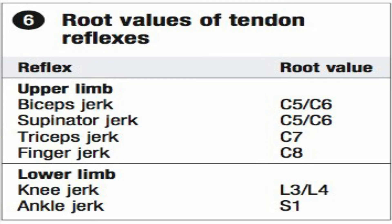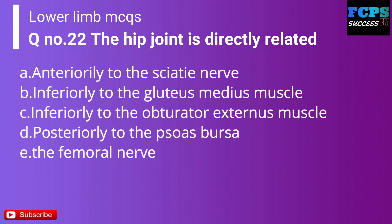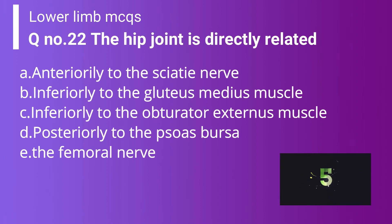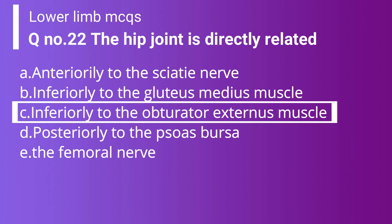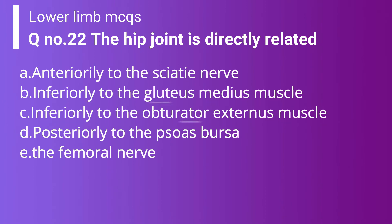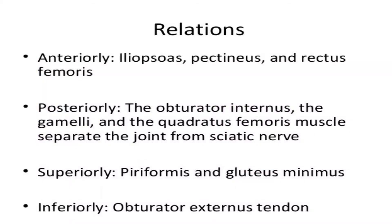Question 22: The hip joint is directly related to — inferiorly to the sciatic nerve; inferiorly to the gluteus medius; inferiorly to the obturator externus muscle; posteriorly to the psoas bursa; or posteriorly to the femoral nerve. The correct answer is Option C — inferiorly it is directly related to the obturator externus muscle. The rest of the relations can be seen in the slides shown.